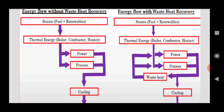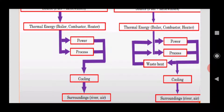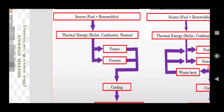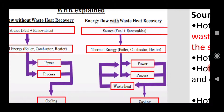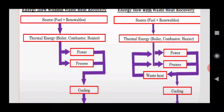This is a waste of fuel if we just go to the cooling tower. We need to use this waste heat — instead of discharging it directly to the cooling tower and surrounding atmosphere, we should recover it. Energy flow with waste heat recovery systems: the source fuel and renewable energy go into the boiler, combustor, and heater. The boiler generates steam, and the steam turbine uses that steam to generate electricity. After producing electricity, there is some amount of waste heat — waste steam is there. This steam is reused to preheat the boiler water.